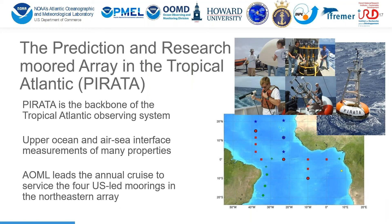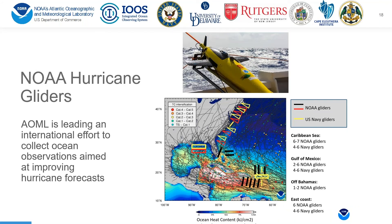PIRATA is the backbone of the Tropical Atlantic Observing System, measuring a suite of upper ocean and air-sea interface properties. AOML leads the annual cruises to service the four moorings in the northeastern part of the array, the main development region of Cape Verde style hurricanes. We are also leading an international effort to collect ocean observations to improve hurricane forecasts by creating a picket fence of gliders in the Caribbean Sea, the Gulf of Mexico, and in the open Atlantic Ocean off the U.S. coast.